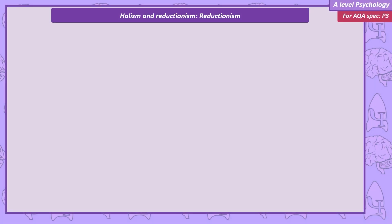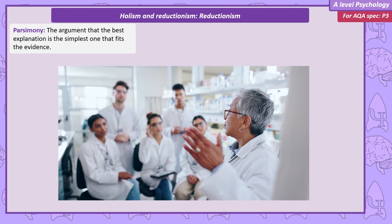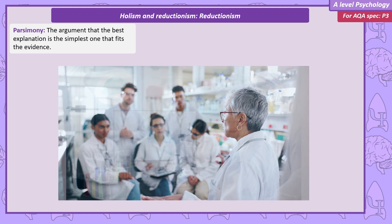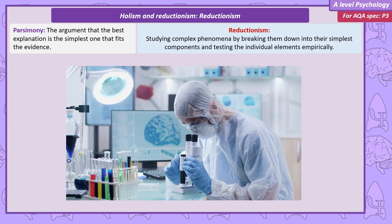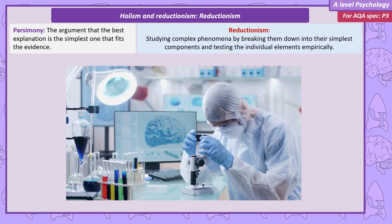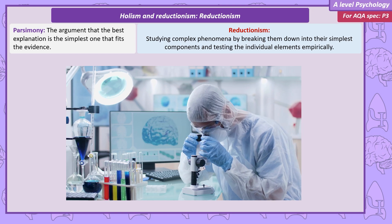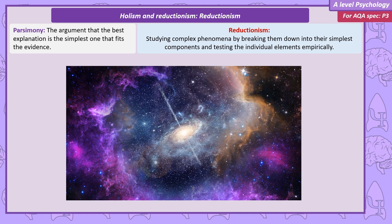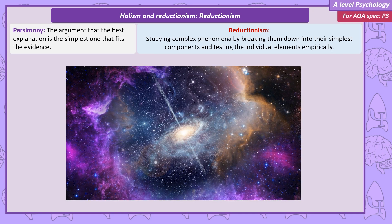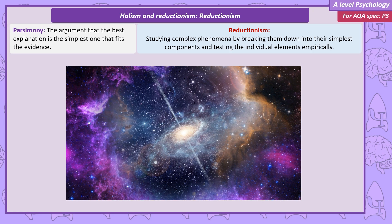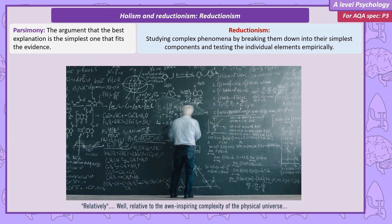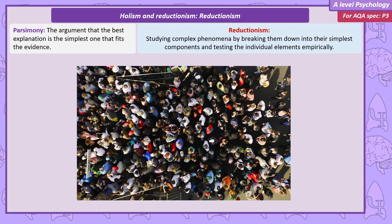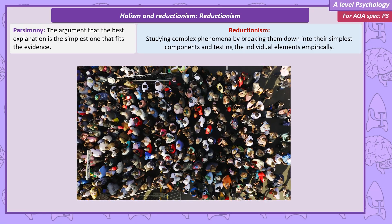Reductionism is based on a scientific principle, parsimony — the argument that the best explanation is the simplest one that fits the evidence. To be reductionist means studying complex things or phenomena by breaking them down to their simplest components and testing the individual elements empirically. Taking a reductionist approach has been very successful in other sciences. Using the principles of physics, the complexity of the physical world can be reduced to some relatively simple equations. In psychology, we can use basic explanations for behaviour that focus on testing simple mechanisms with very few assumptions.